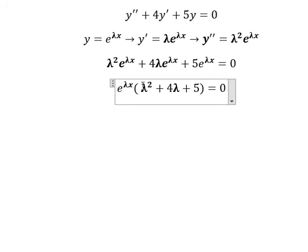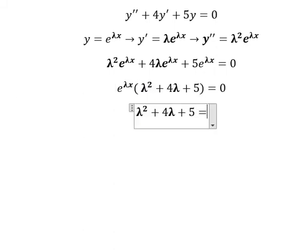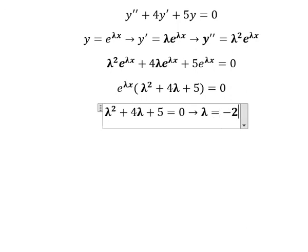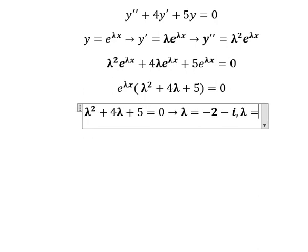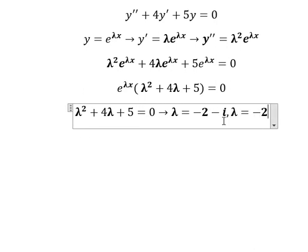So now we need to find the solution of this one, and we have two solutions. The first one is λ equals negative 2 minus i, and the second one λ equals negative 2 plus i.